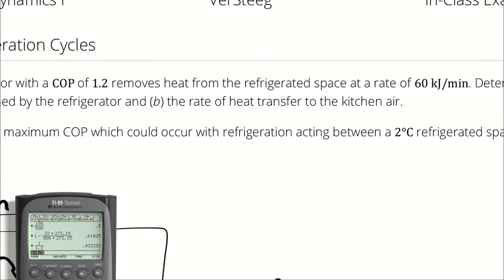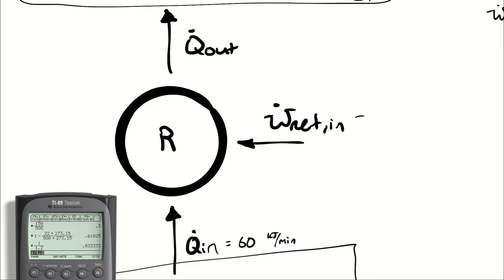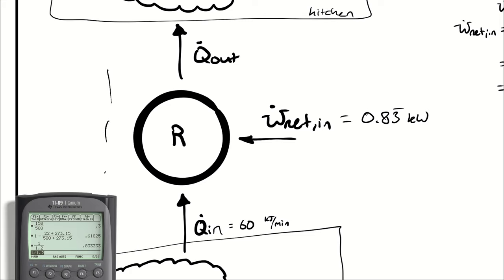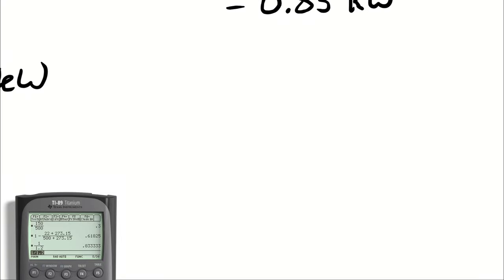The next question asks, what is the rate of heat transfer to the kitchen air? Well, if I'm pulling in electrical power at a rate of 0.83 kilowatts, and I'm pulling in heat at a rate of 60 kilojoules per minute, and the only place that that can go is heat transfer out, then my heat transfer out is going to be the network in plus the Q_in. That comes from an energy balance on the kitchen refrigerator itself.